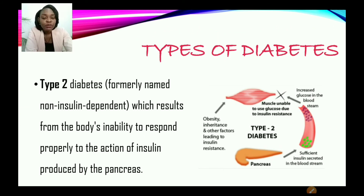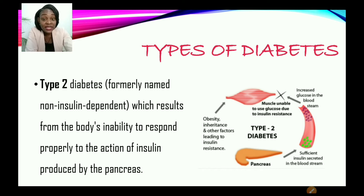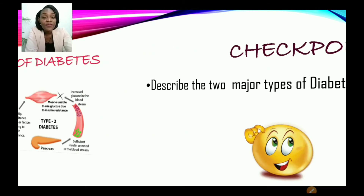Now, let us look at type 2. Type 2 diabetes, formerly known as non-insulin dependent, results from the body's inability to respond properly to the action of insulin produced by the pancreas. So patients with type 2 diabetes — their pancreas is producing the insulin, but the body is unable to process it. Therefore, the insulin is ineffective.